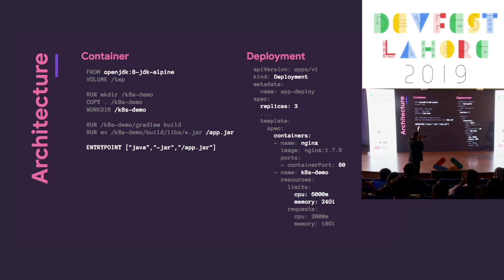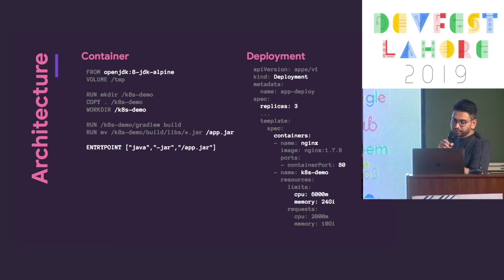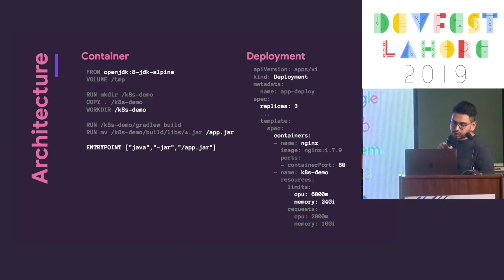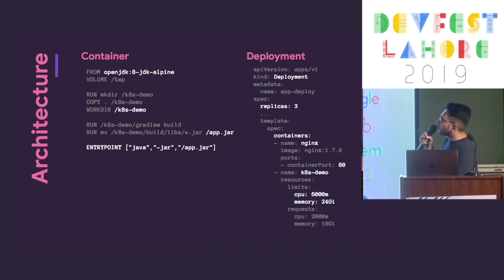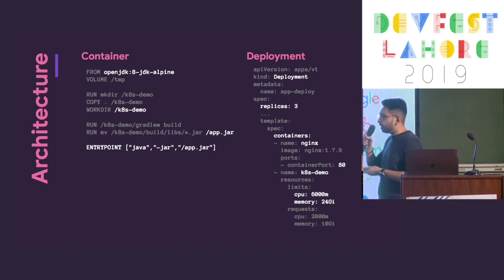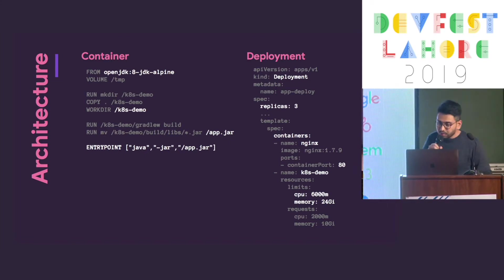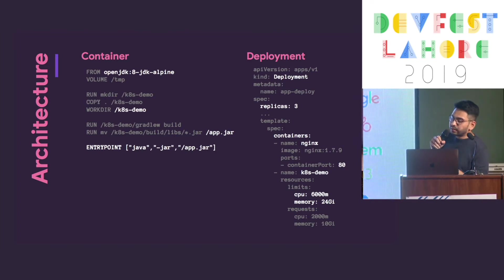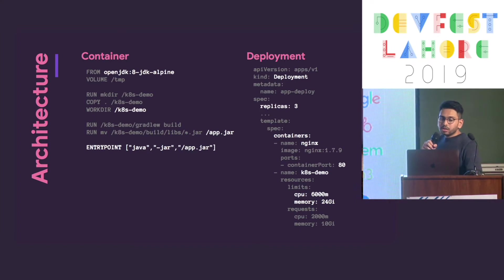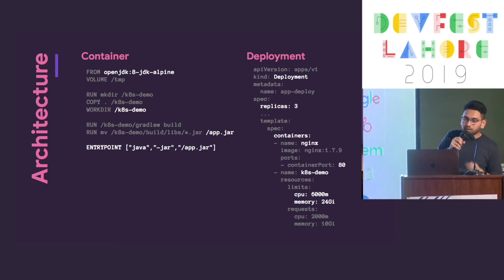Here's a quick example. On the left side, there's a demo app's definition in which I have just told it what's needed to run the application. For example, I need openJDK and Java installed. The app's directory is kubernetes-demo. And to run it, I will create a compiled JAR. So Kubernetes installs all the dependencies and compiles and runs your application for you.